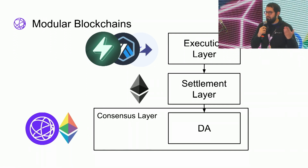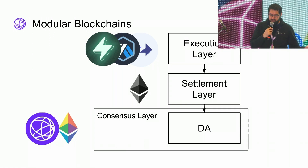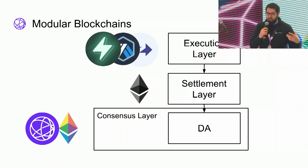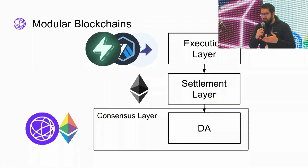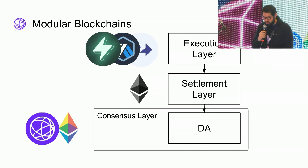On top of the settlement layer you have a completely separate execution layer — these can be rollups like Fuel, Arbitrum, zkSync, and many others. This model is so effective because the base consensus layer is not burdened with settlement and execution; it specializes in data availability, providing much higher capacity. Similarly, execution and settlement layers, by specializing, can deliver much higher throughput.